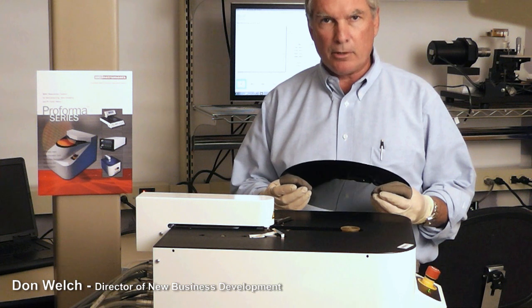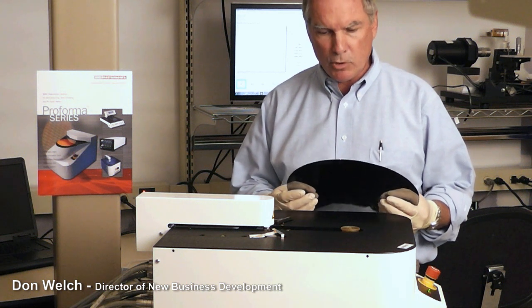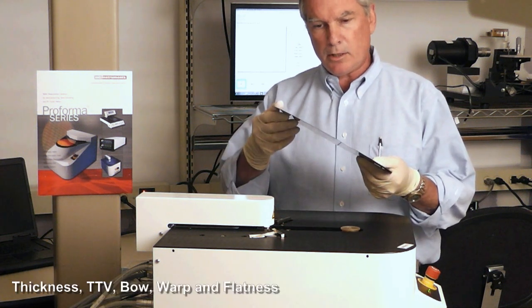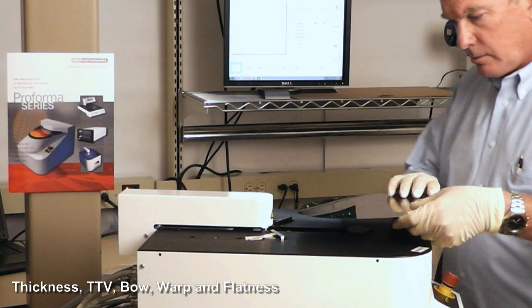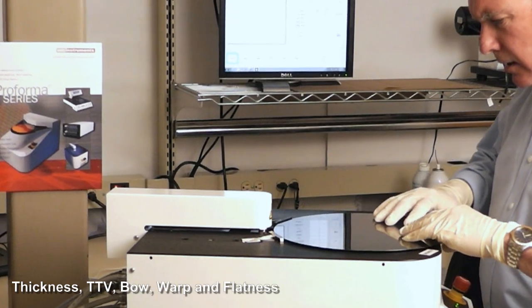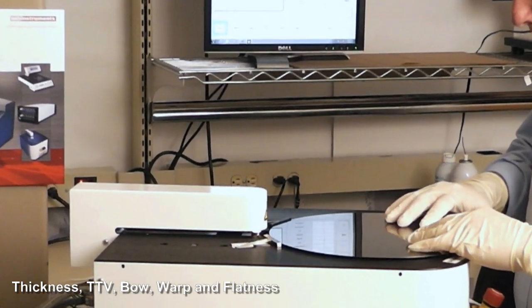Today we're looking at a Proforma 300SA, which is a precision measuring tool to measure the thickness, flatness, and warp of semiconductor wafers. We're going to load the wafer and start taking the measurements.